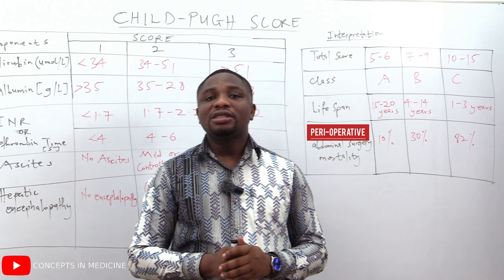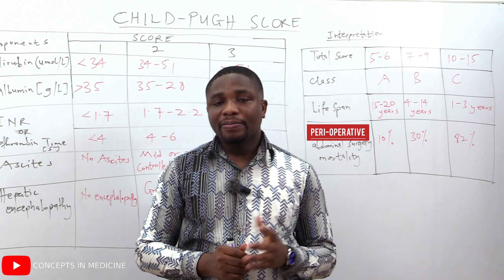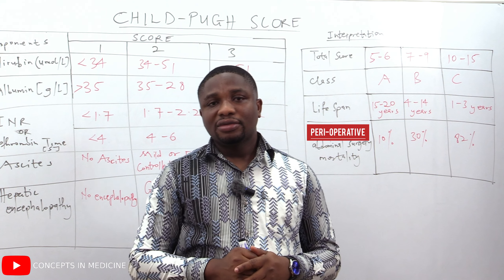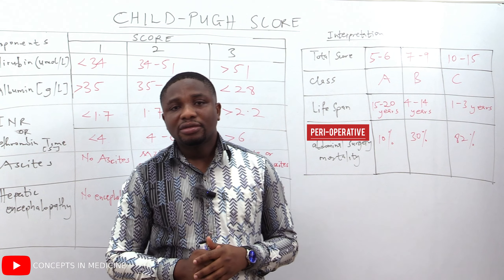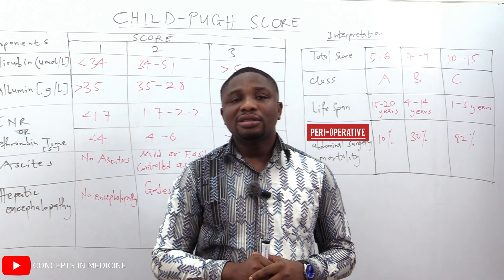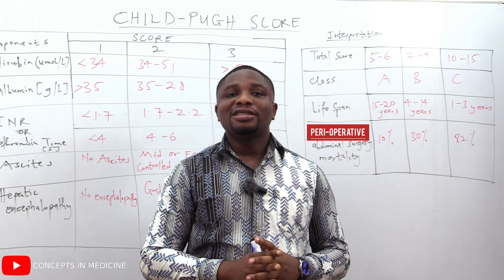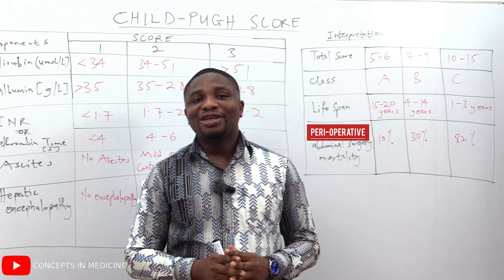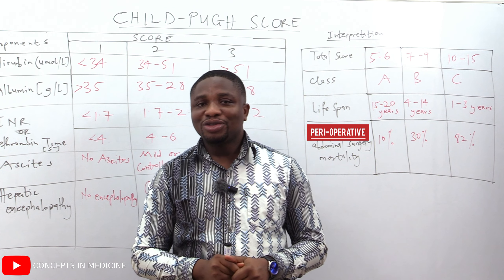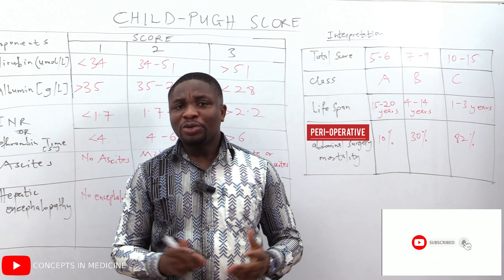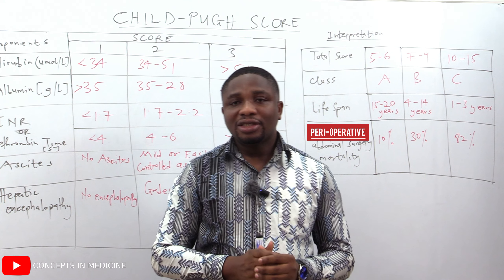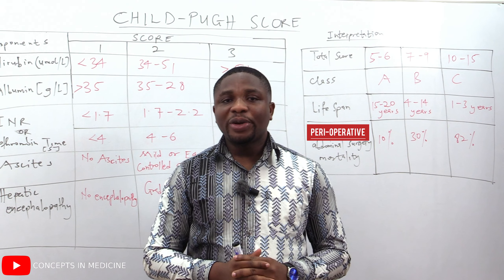Once all five components are scored, we can interpret the total. A total score of five to six is classified as Class A. A total score of seven to nine is Class B. A total score of ten to fifteen is Class C.